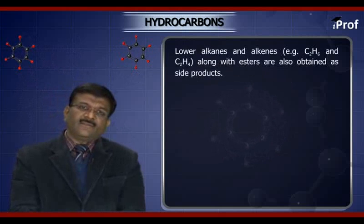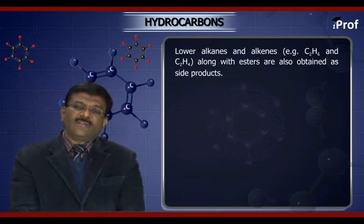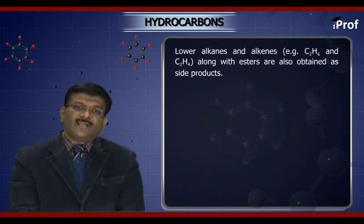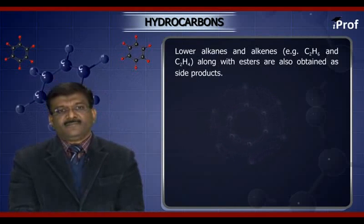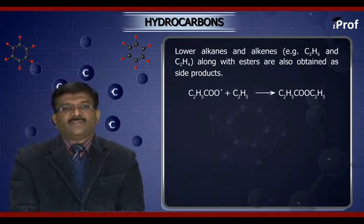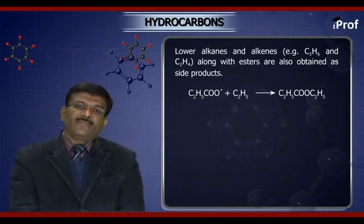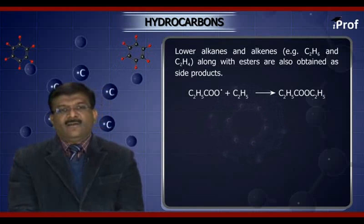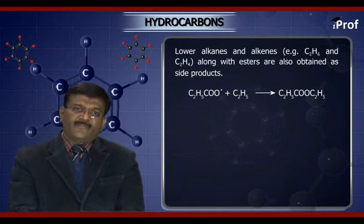Lower alkanes and alkenes — for example C₂H₆ and C₂H₄ — along with esters are also obtained as side products. For example, the C₂H₅COO radical combined with an ethyl radical gives the ester C₂H₅COOC₂H₅, but only in a small quantity.